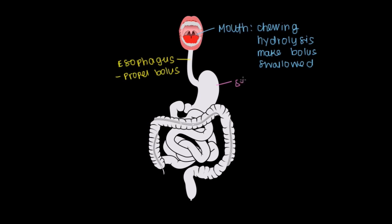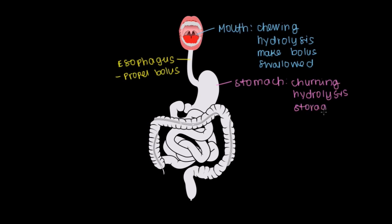Now we get to the stomach — a lot of action going on here, one of my favorite parts of the GI tract. The stomach is responsible for multiple things, including churning, which is a lot like chewing except there are more dimensions of contraction affecting and breaking down the food. We also have hydrolysis going on here — the enzyme-assisted breakdown of food. In addition, you can store food in your stomach if it's not time to pass it on. The overall goal is to make what's called chyme, where we take our bolus and melt it down into a more fluid substance to pass on to our intestines.